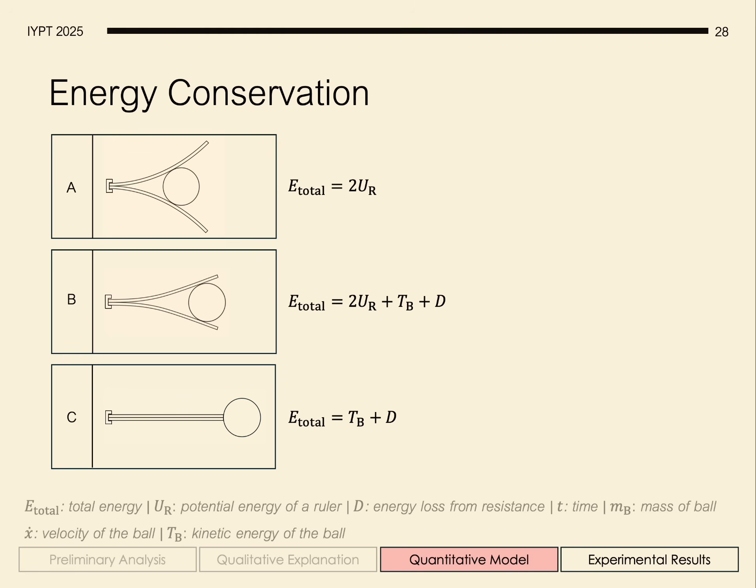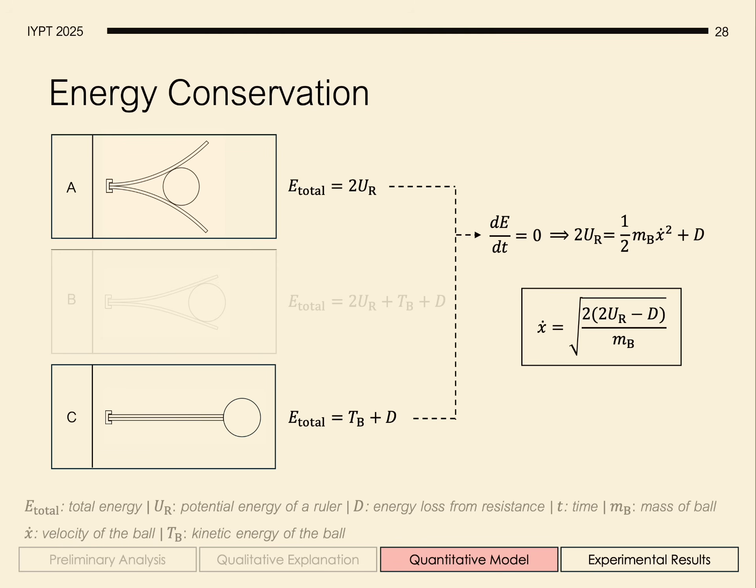And so looking at just the initial and final energy, we're going to apply the conservation of energy to realize that the two are equal. And rearranging this, we obtain our expression for the exit velocity.